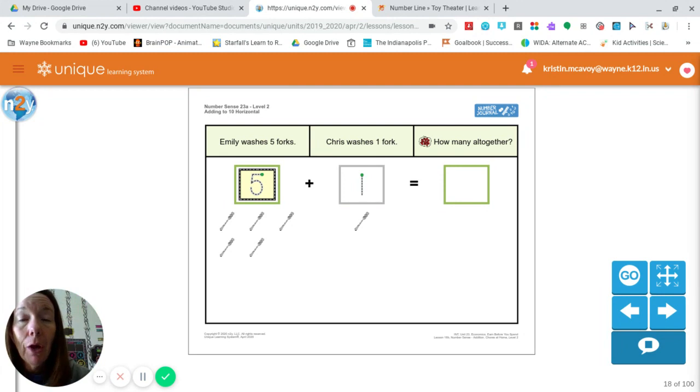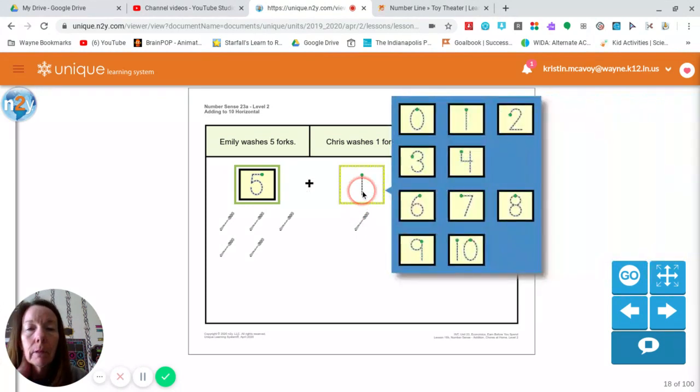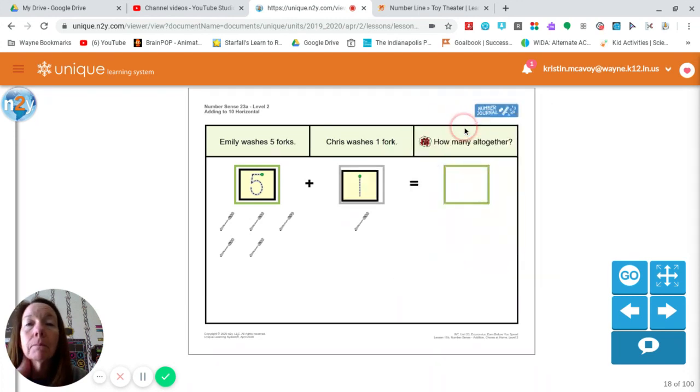You can write the number five while I match it. Do you see number five? There it is. Good job. Now it says we have our plus. Chris washes one fork, so we have just one. You can trace, write the number one with your writing utensil. I will match number one.